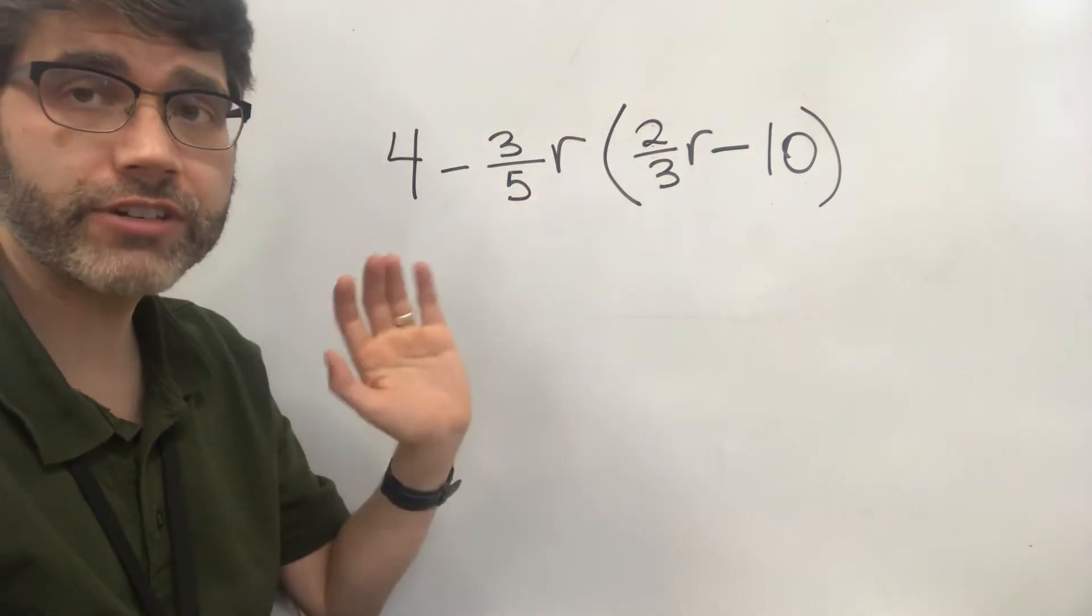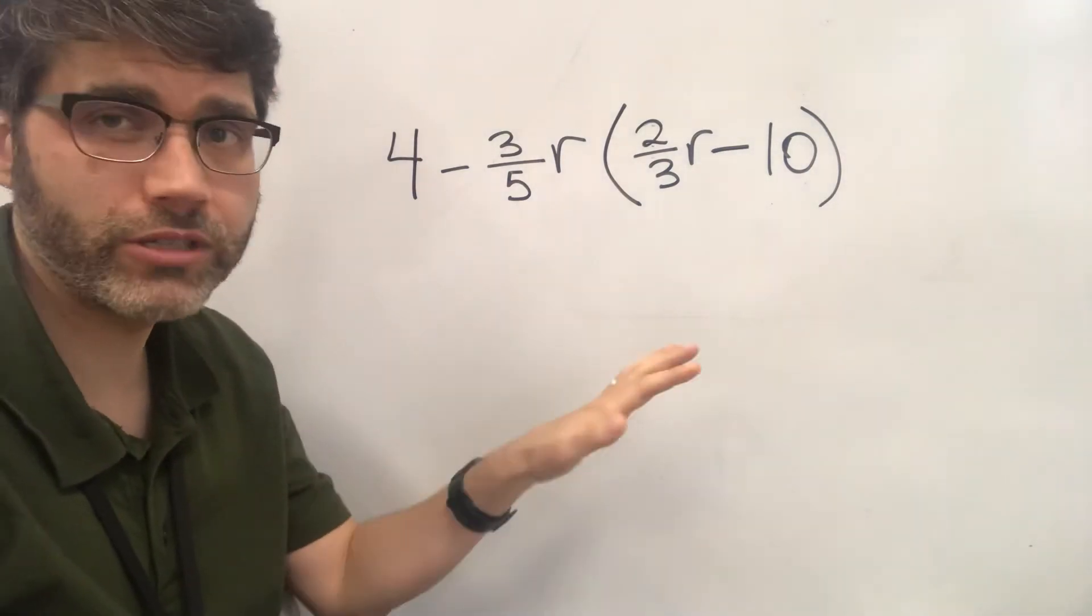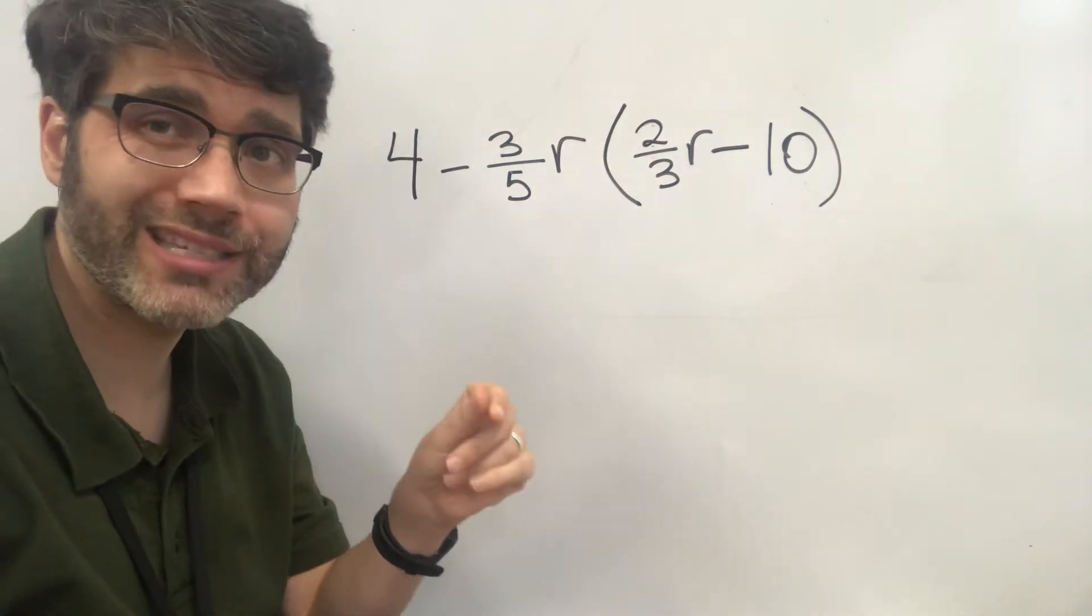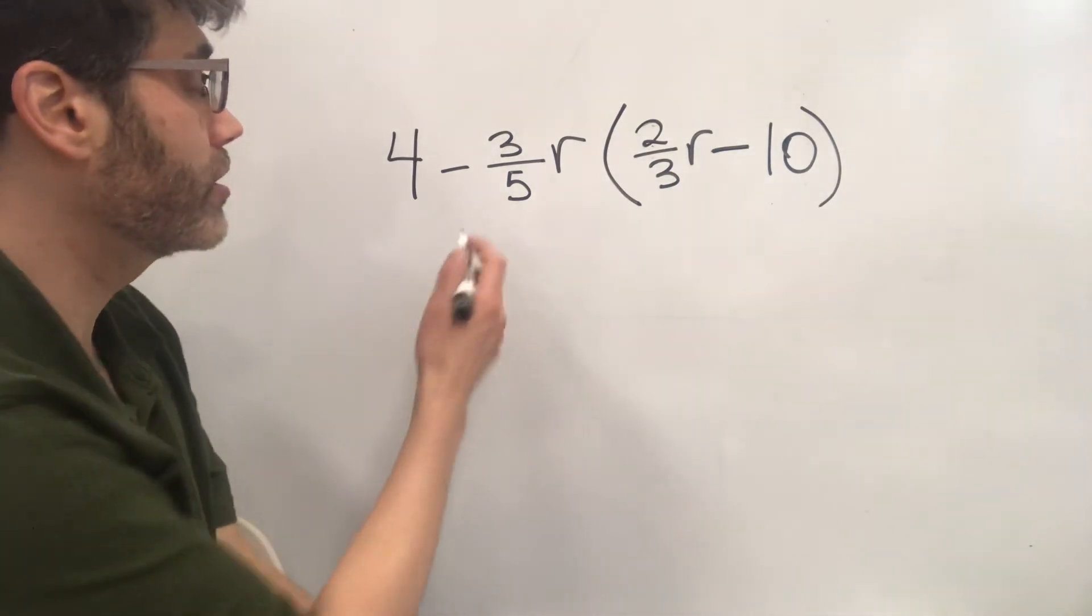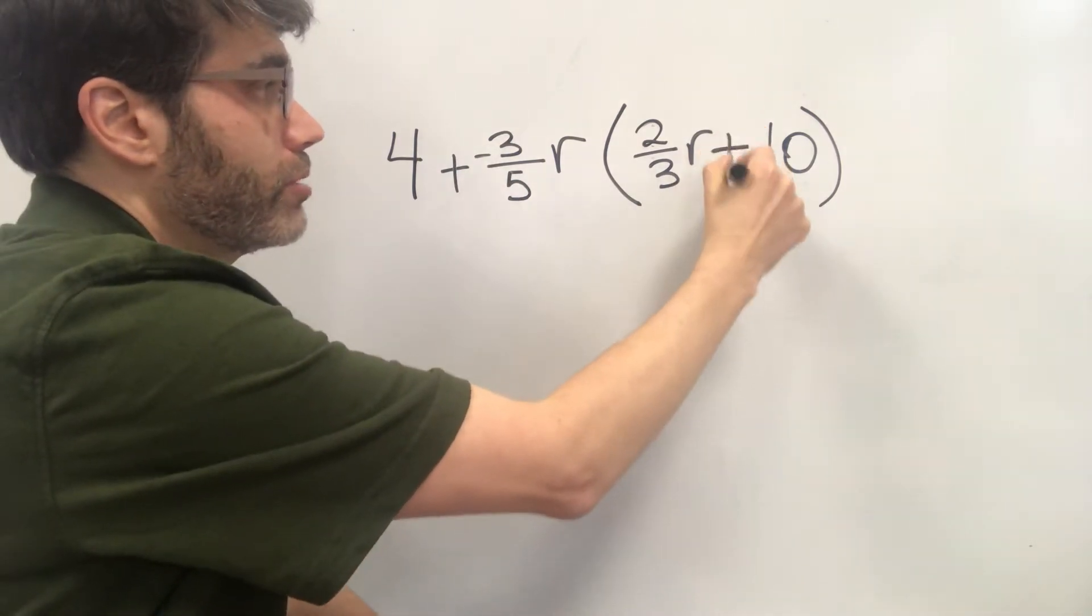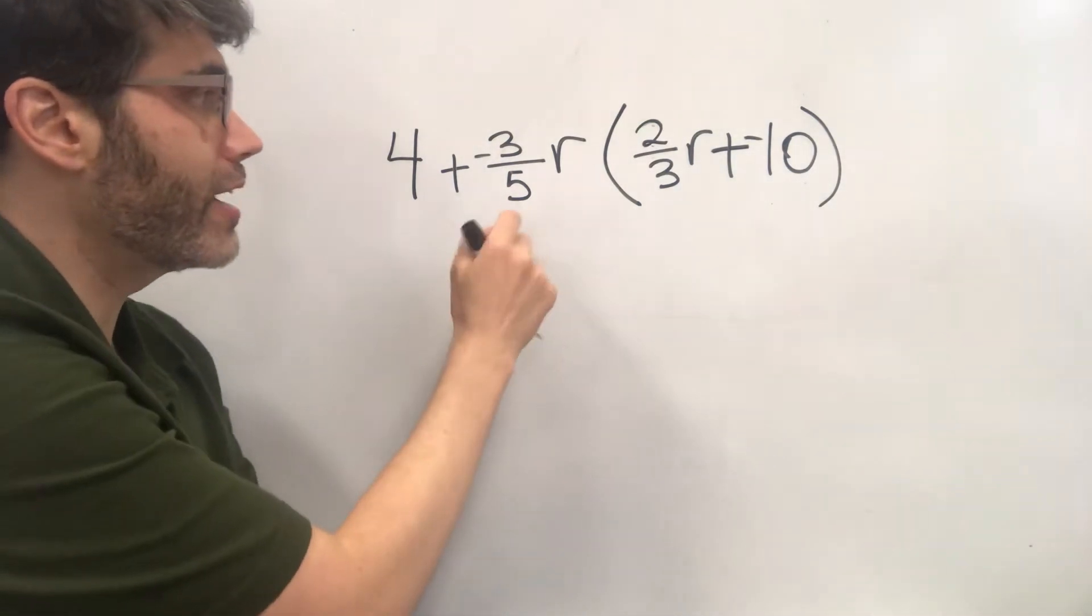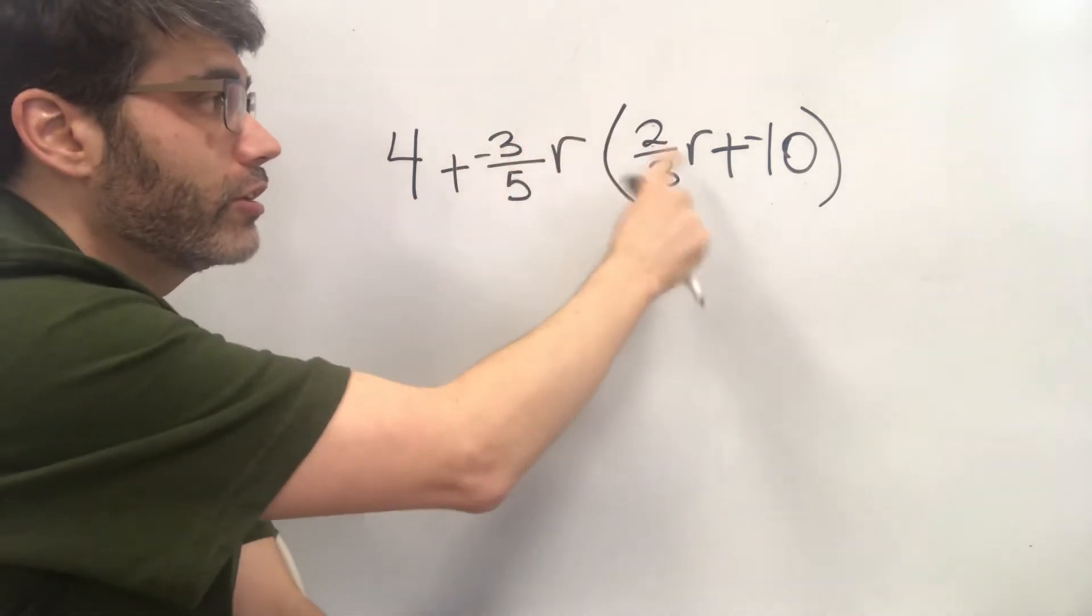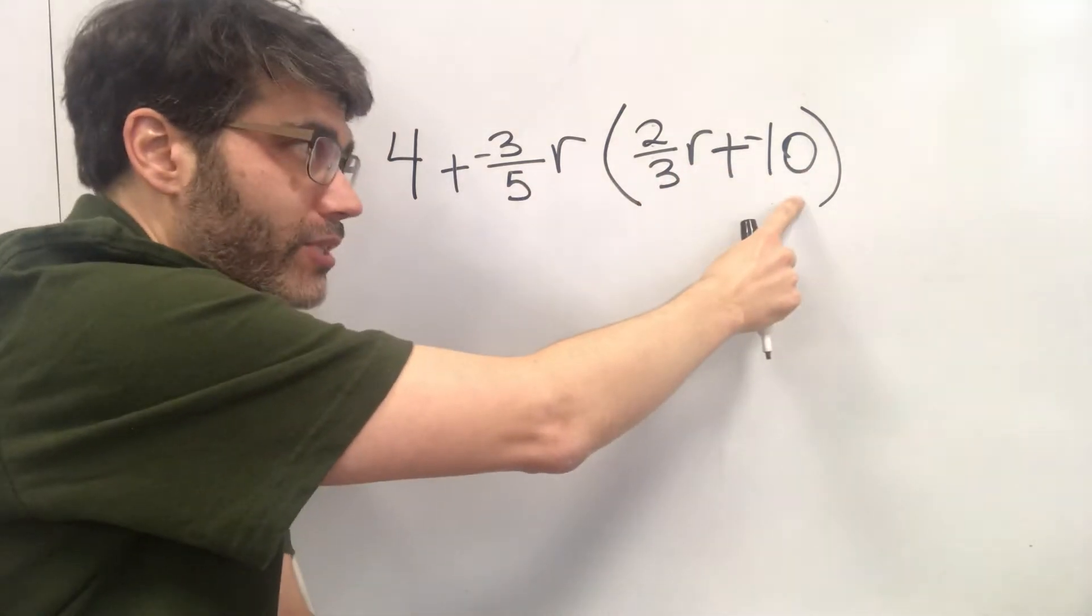The very first thing that we do before we even start thinking about what to do in the problem is if you see subtraction signs, turn them into plus negatives. So here we have a subtraction sign, we're going to turn this into a plus negative. Here we have a subtraction sign, we're going to turn into a plus negative. That really helps us visualize that this is a negative term and when we're going to be distributing this over everything else, this is a negative term times this, this is a negative term times that.